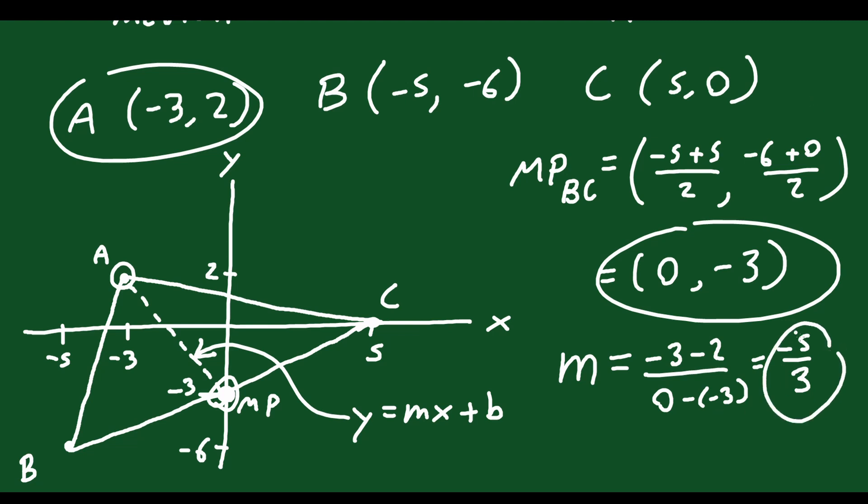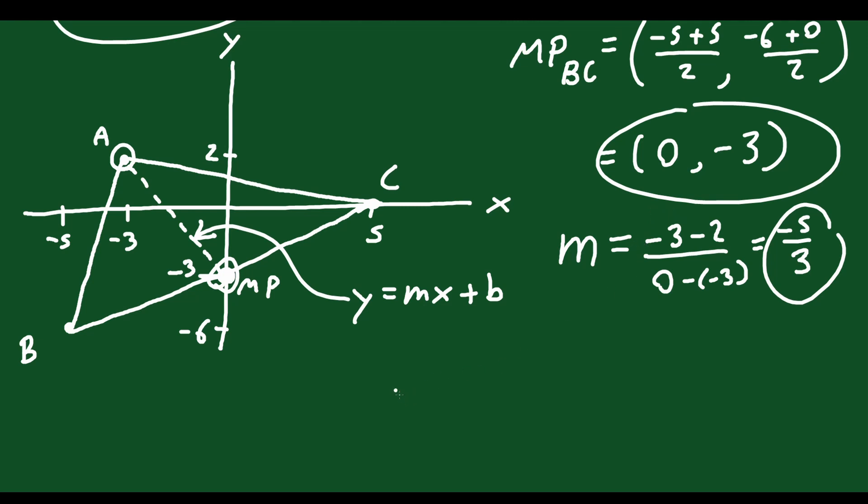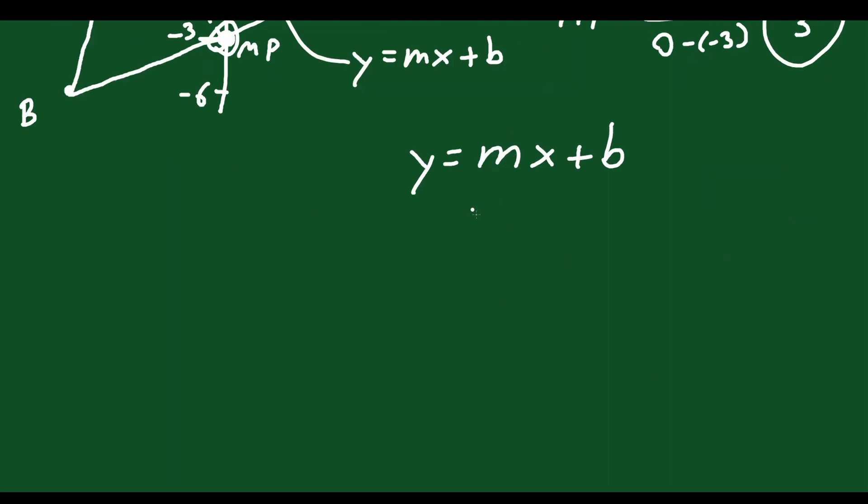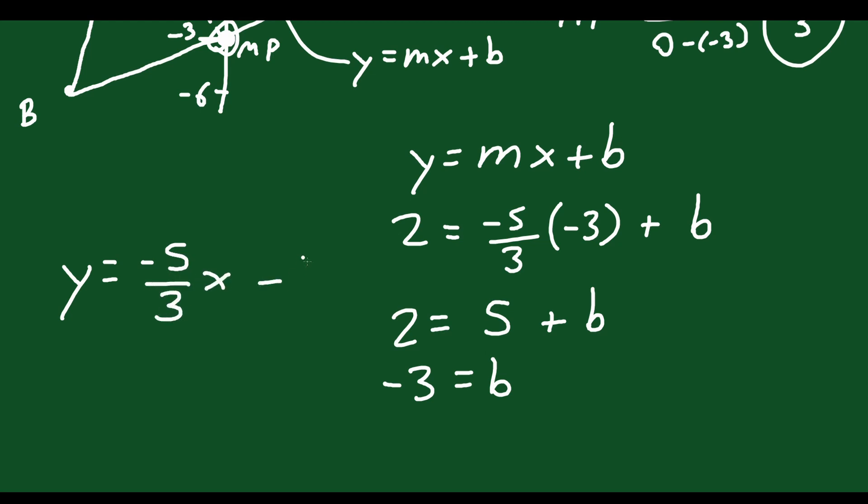So now we have the slope, and we have several points. We can use either point that we want. But let's set this up. So y equals mx plus b. I'm going to plug in my m value that I just figured out. It's -5/3. I'm going to plug in point A. So your x value was -3, and your y value is 2. And then plus b, and we can solve for b. So 2 equals -5/3 times -3, those 3s cancel, the negatives cancel, you're left with 5 plus b. Move the 5 to the other side, you get 2 - 5, which is -3. b equals -3.